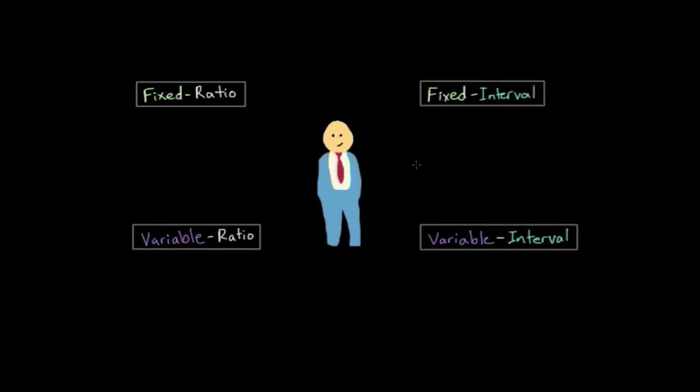So here you can see the four schedules of partial reinforcement. If these terms are new to you, don't worry. They'll start to make a lot more sense when you break them apart. So for our purposes, I want you to associate the word ratio with amount of responses. The word ratio looks similar to ration, and a ration of food, for example, is a certain amount of food. So ratio means amount, and for our purposes, an amount of responses.